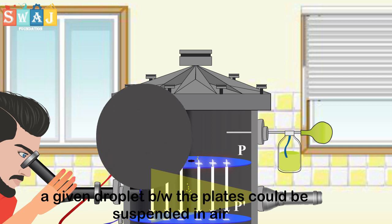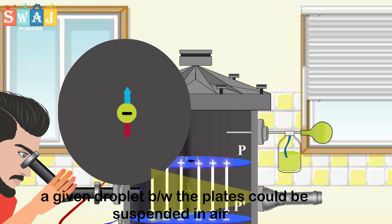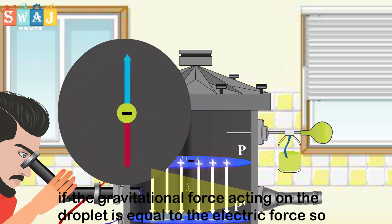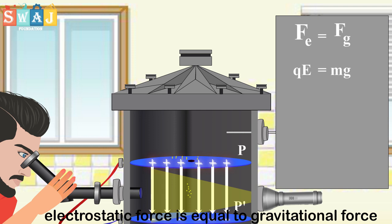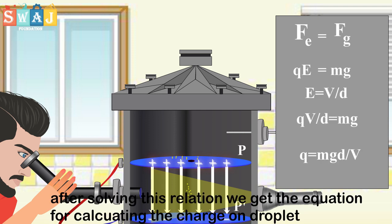A given droplet between the plates could be suspended in air if the gravitational force acting on the droplet is equal to the electric force. After solving this relation, we get the equation for calculating the charge on droplet.